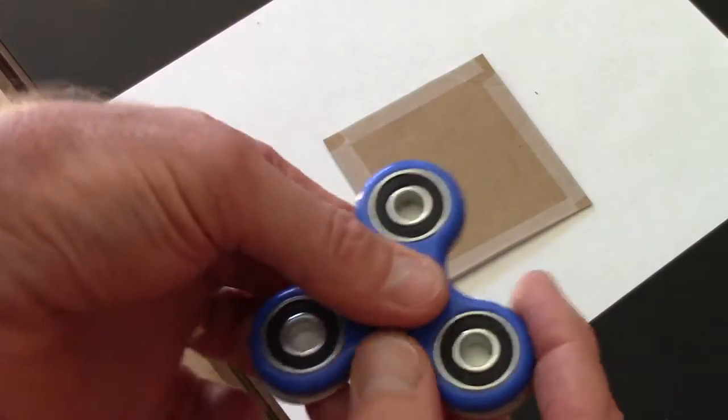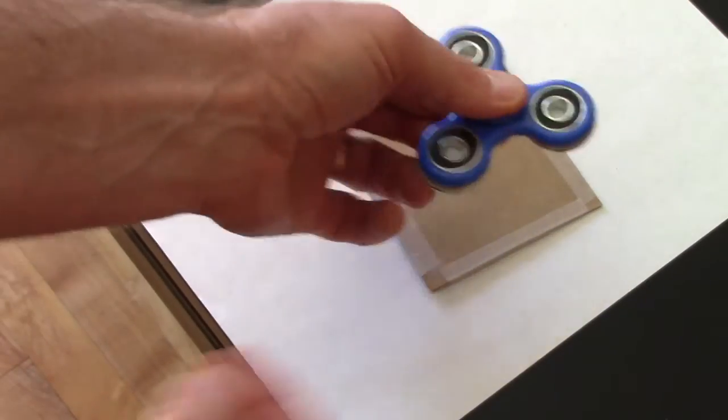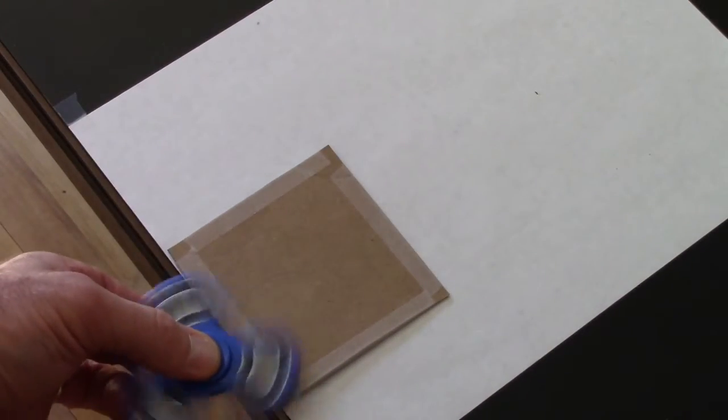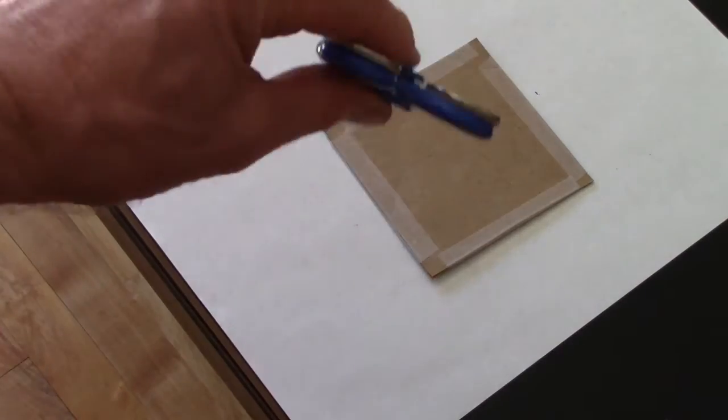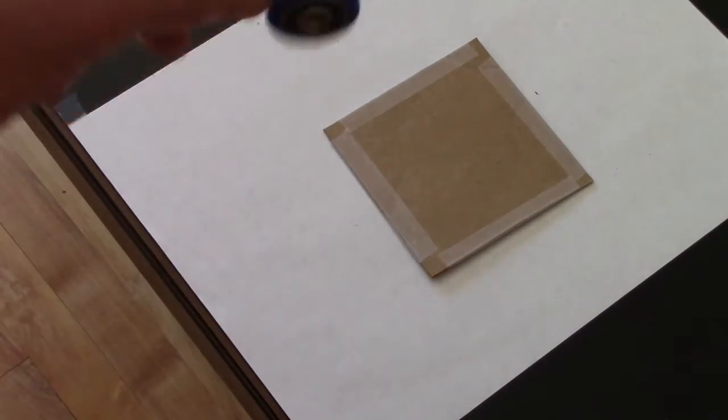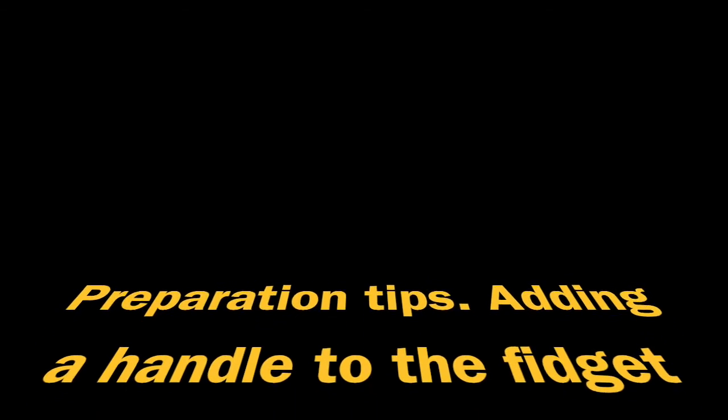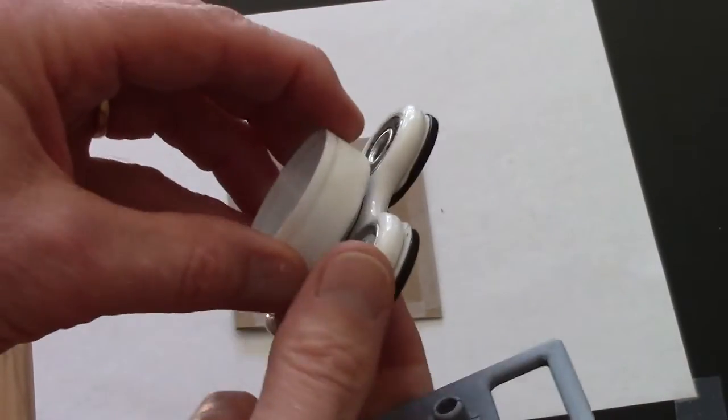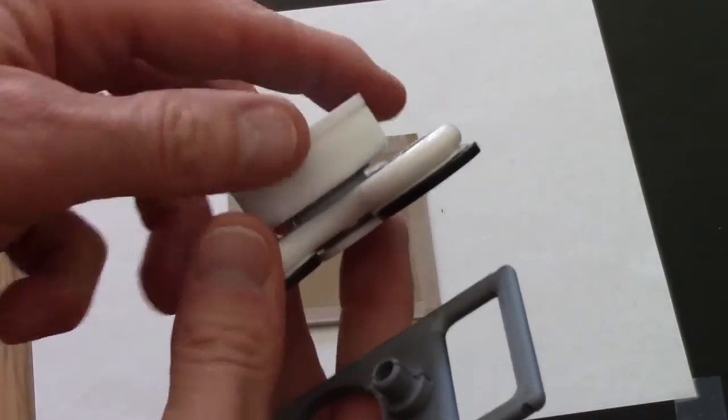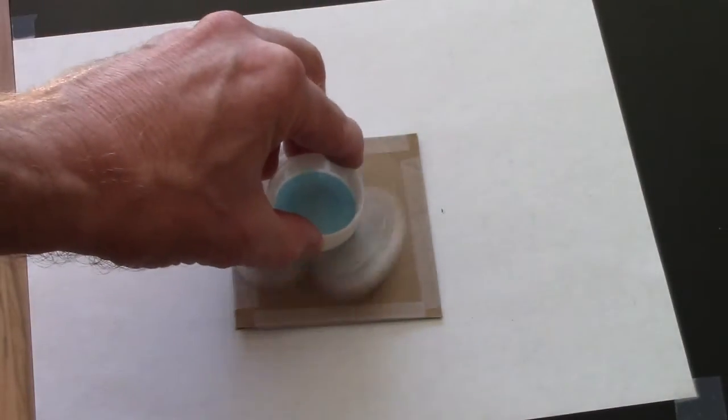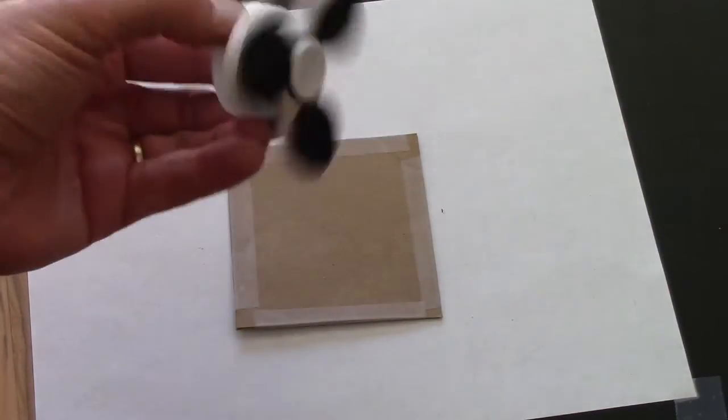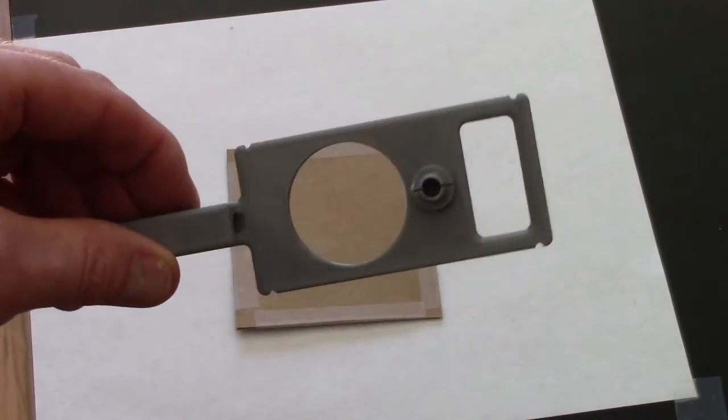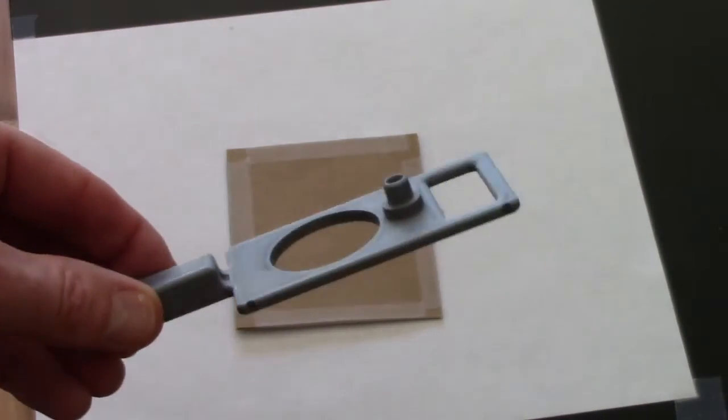If I hold the fidget spinner like this, I really can't get very close to it without my fingers getting in the way. What we're going to do is put a handle on this. One handle that works well for the fidget spinner is just to put a bottle cap glued to one side, and now I can hold this close or far really easily.